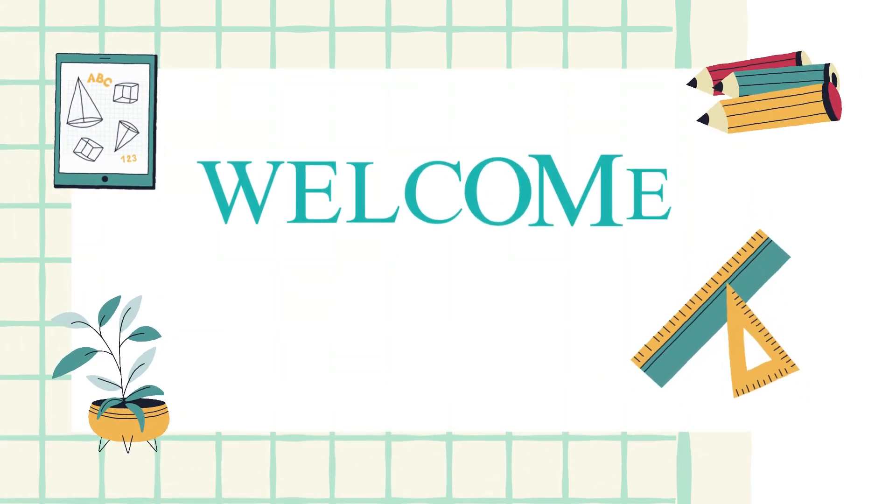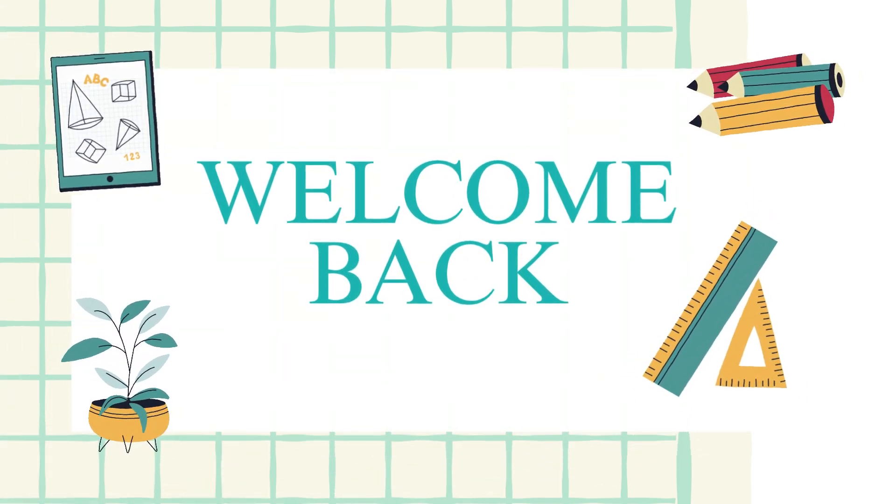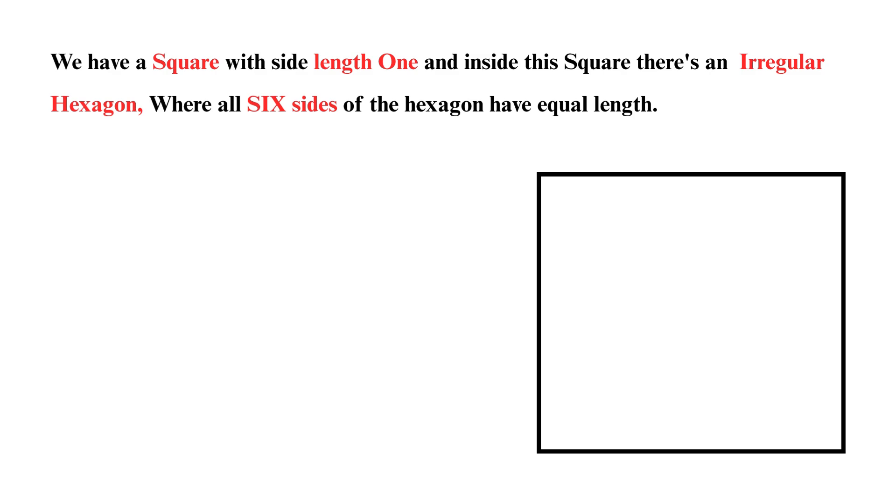Hello and welcome back. In today's video, we're going to explore a challenging problem from an Oxford University admission test. Let's see how we crack it. The problem is, we have a square with side length 1, and inside this square, there's an irregular hexagon, where all six sides of the hexagon have equal length. Our goal is to find the length of one side of the hexagon.